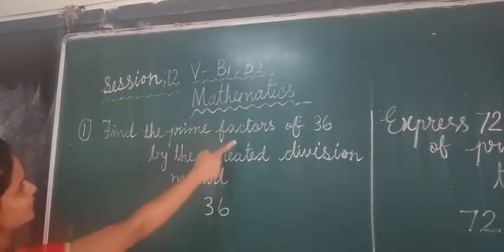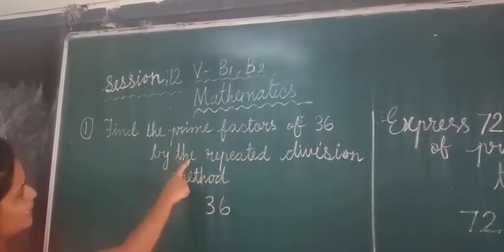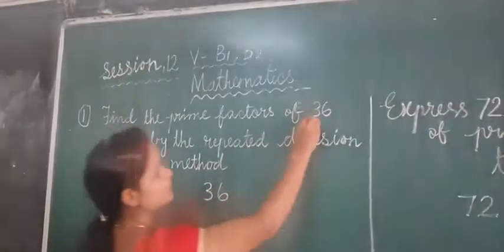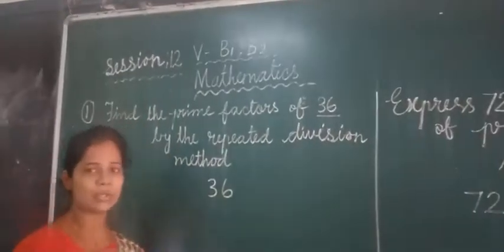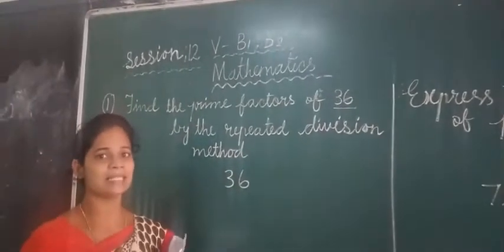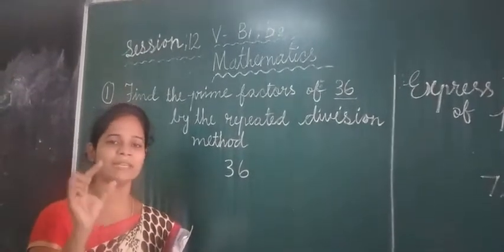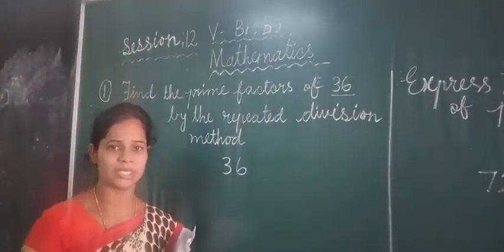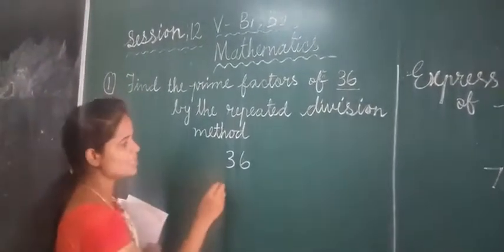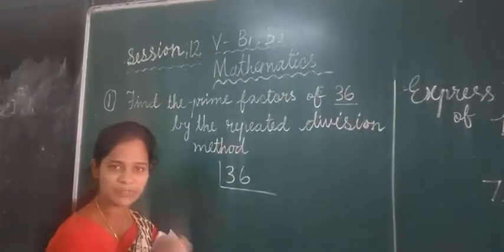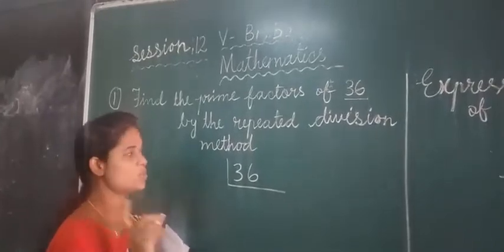Find the prime factors of 36 by the repeated division method. This number 36, how I showed you in the earlier classes, we have to keep dividing until we get the smallest number. So shall we do? By using the number 36, this is called repeated division method. That you remember.